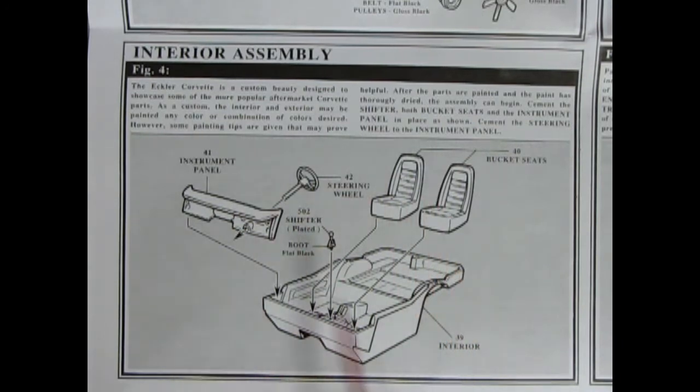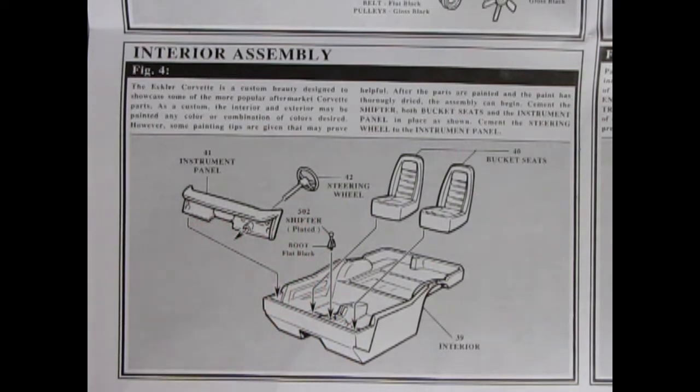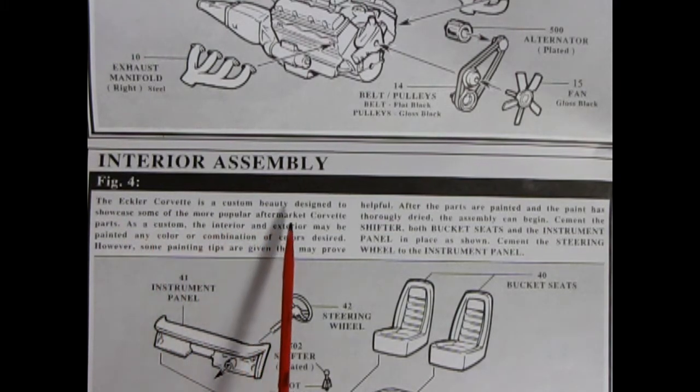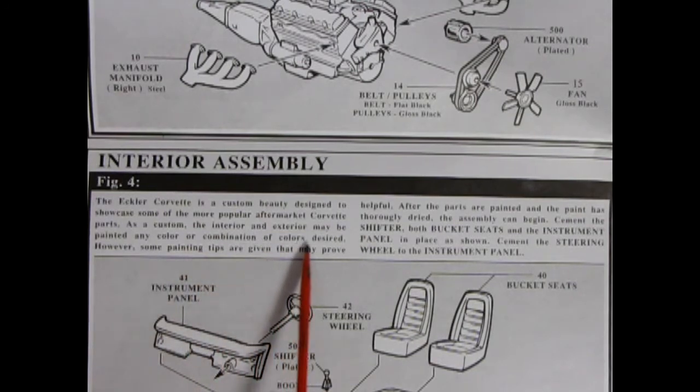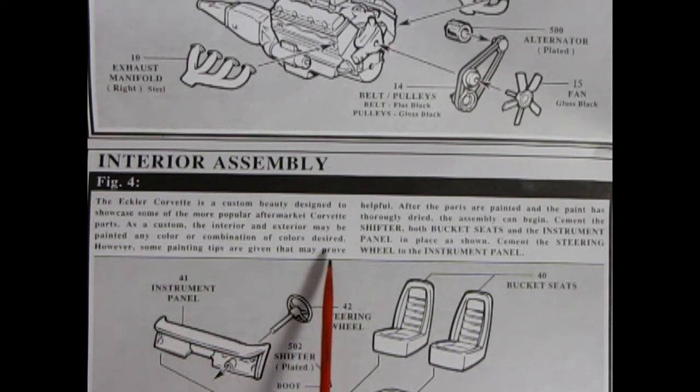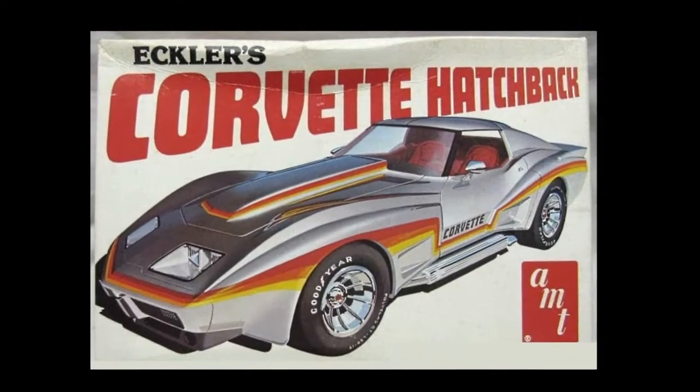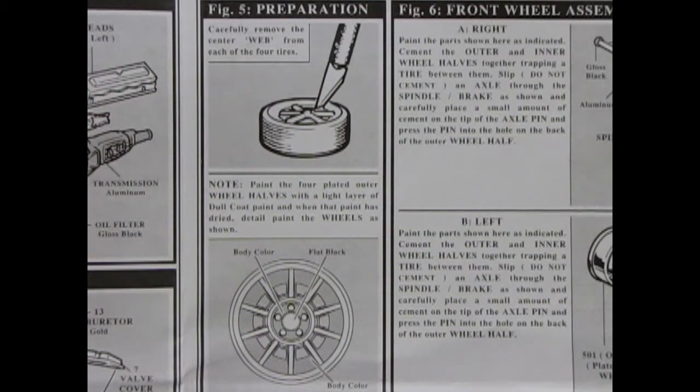That's right, as we take a look at our interior. Now we do have the typical Corvette interior bucket, our bucket seats which drop into the tub and then our shifter, steering wheel with console, and our instrument panel. Here's an interesting write-up that I found in figure four. It says the Eclair Corvette is a custom beauty designed to showcase some of the more popular aftermarket Corvette parts. As a custom, the interior and exterior may be painted any color or combination of colors desired. However, some painting tips are given that may prove helpful. After the parts are painted and the paint is thoroughly dried, the assembly can begin. So now we know this is an Eclair Corvette.